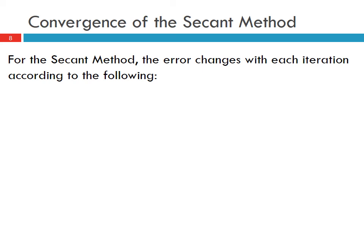We can talk about convergence of the secant method similar to how we did for the Newton-Raphson method. With Newton-Raphson, the convergence was quadratic, so the error in each iteration is proportional to the square of the previous error. For the secant method, the error changes with each iteration according to E_{i+1} proportional to E_i^{1.618034}.